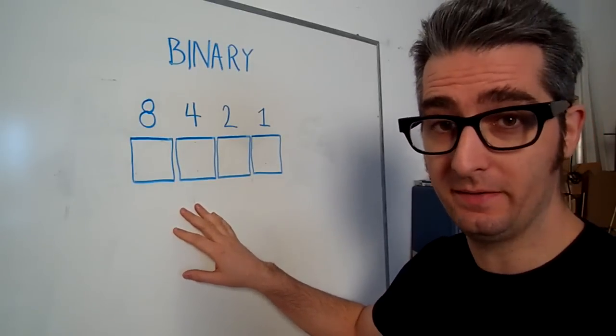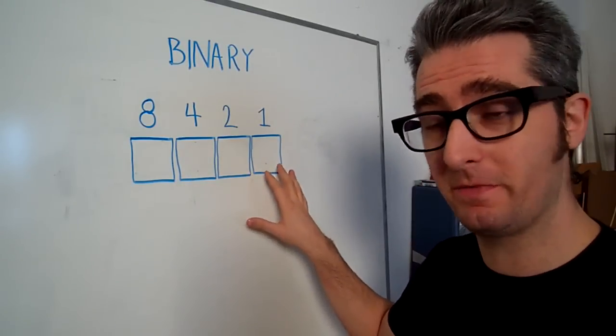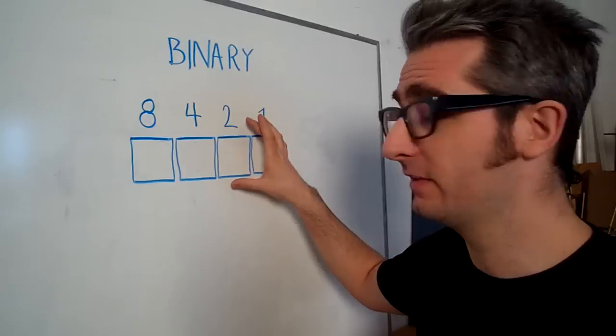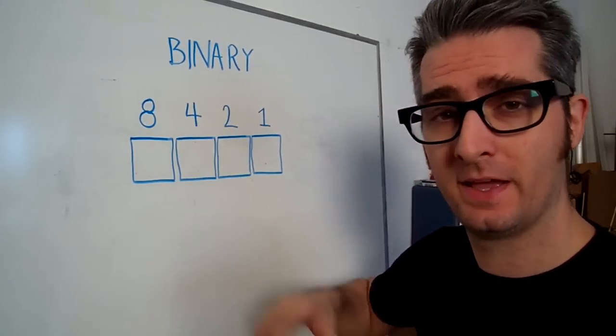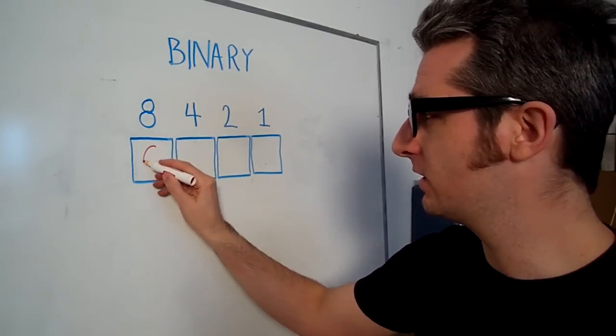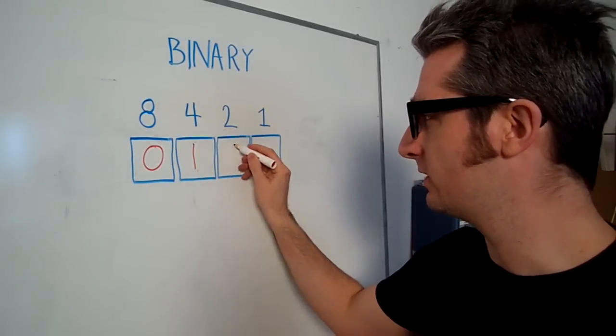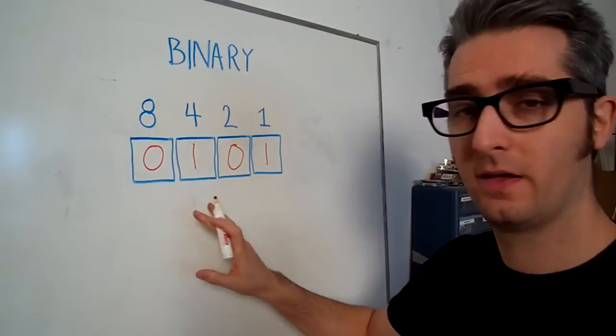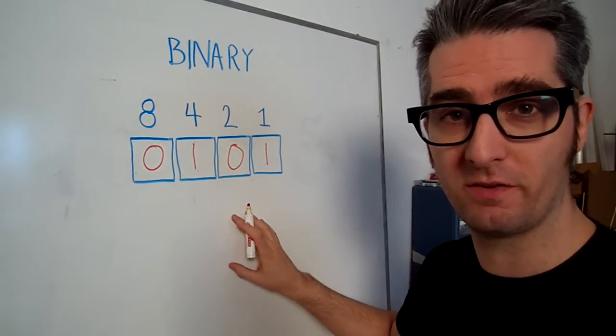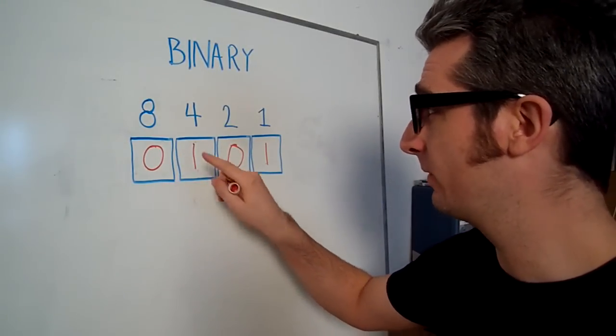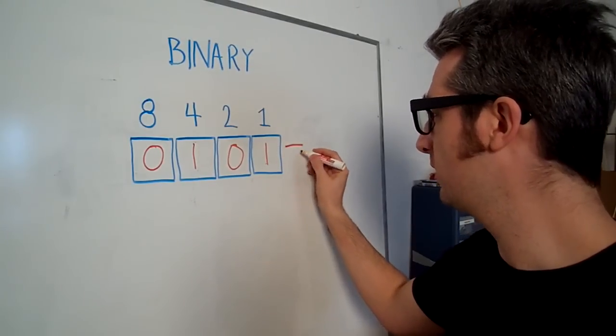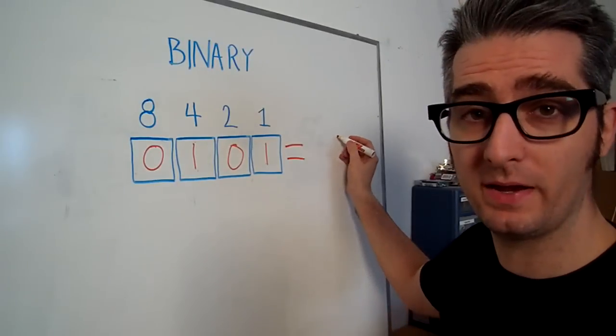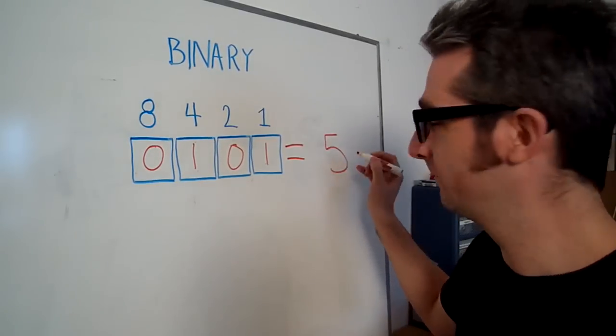Each of these squares is a bit and each bit has a different value. This one's worth 1, this one's worth 2, this one's worth 4, this one's worth 8. And so if I put a 0 here and a 1 here and a 0 here and a 1 here, this is a representation of a binary number. And if I add it up, there's one 4 and there's one 1, that means that 0, 1, 0, 1 in binary is equal to 5. Pretty easy, right?